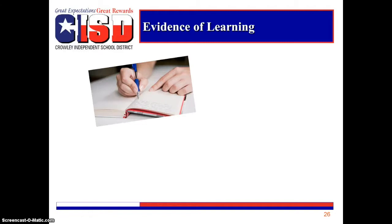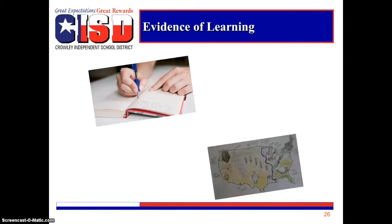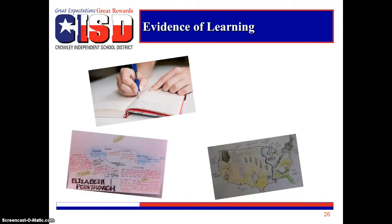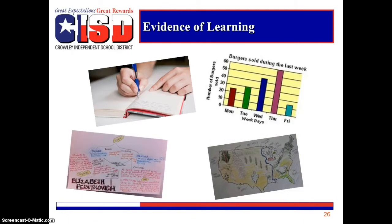Authentic writing assists students in processing their thinking and makes the task authentic. Diagrams such as a map, a story map, graphs, charts, and drawings which include student thoughts and/or textual evidence are all evidences of learning. Oral, written, and/or medial presentations are additional evidences of learning.